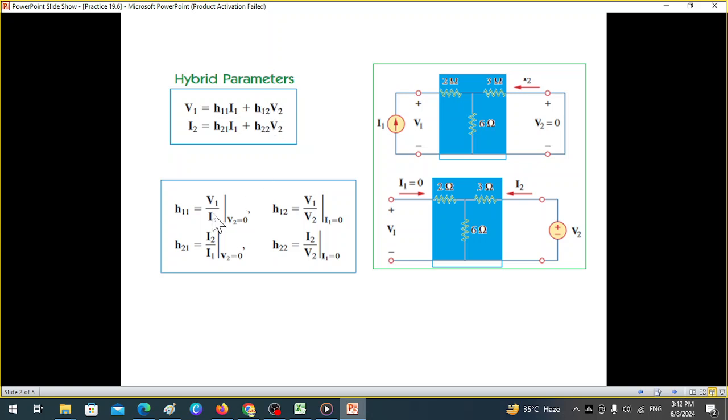this term will become 0 and therefore we calculate H11. How do we put V2 equal to 0? We short circuit the output terminal. And similarly, H21, this one, here also V2 is 0, therefore it is I2 over I1.